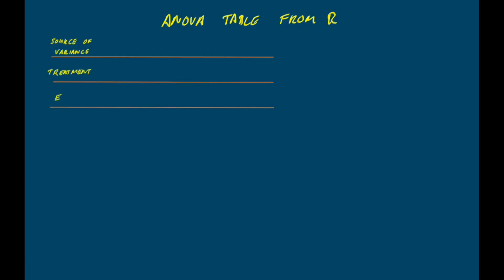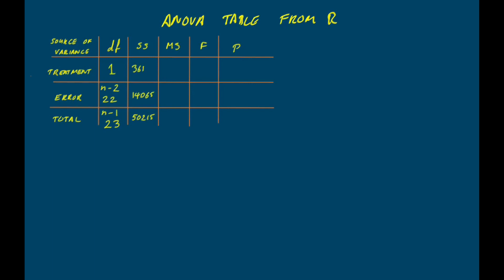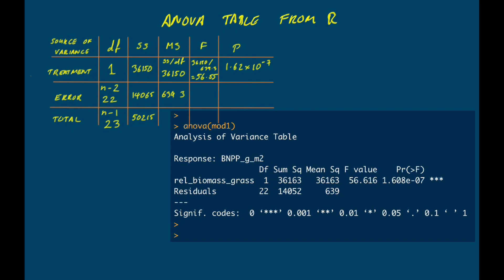Of course, we don't usually calculate an ANOVA table for linear regression by hand — we ask software to do it. Here I've fitted a model called mod1 as a linear regression and used R's ANOVA function to produce the ANOVA table. Give or take small rounding differences at the fourth or fifth significant figure, the values match what we calculated manually. The only notable differences are that R describes errors as 'residuals' and doesn't include a row for the total sum of squares, which isn't particularly relevant here. Hopefully that's shown you how R's ANOVA table for a linear regression is calculated.